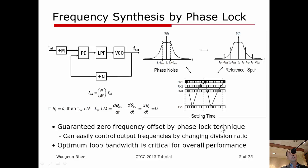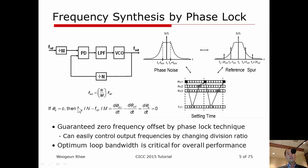One of the most important properties of the phase-locked loop is that it guarantees a zero frequency offset by the phase-lock technique, even when a static phase offset is present due to circuit mismatch in phase detection. Therefore, as illustrated here, we can easily control output frequencies by simply changing the division ratio of the digital divider.